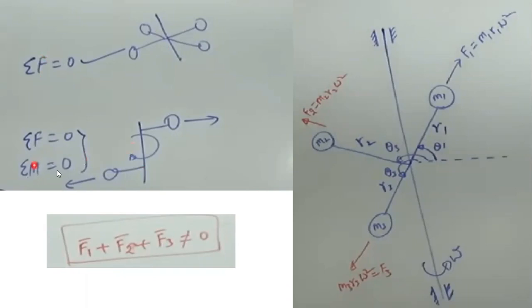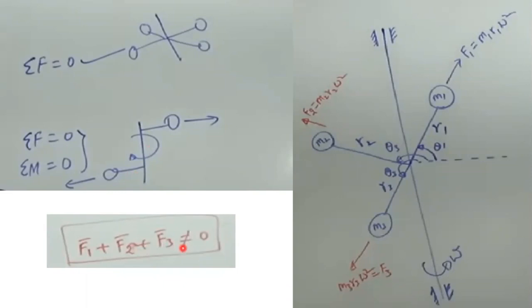Whereas in dynamic balancing we deal with couples also — summation of moment will also be equal to zero. Here we have two different masses rotating in two different planes, with the shaft having the same angular velocity. If the summation of all forces is not equal to zero, there will be some unbalance induced into the system.